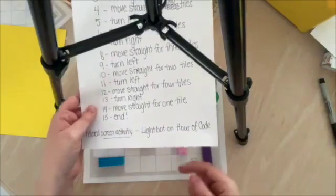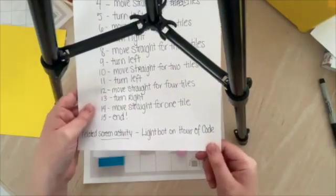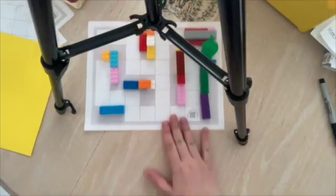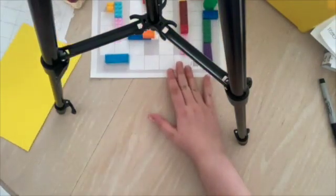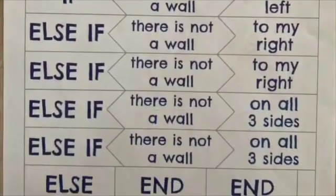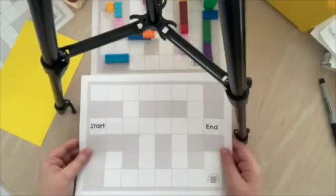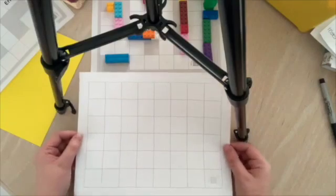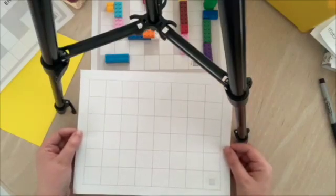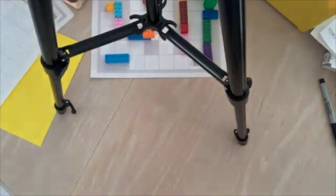So that is how our algorithm is broken down step by step. And if you want to do a screen version of this, Lightbot on the Hour of Code website is fantastic. So now you have a lot of other templates in your packet, even some if/then instructions. You also have a few templates of graph paper to design your own maze. So what kind of code or algorithm can you come up with? It's time to try it yourself. Have fun!